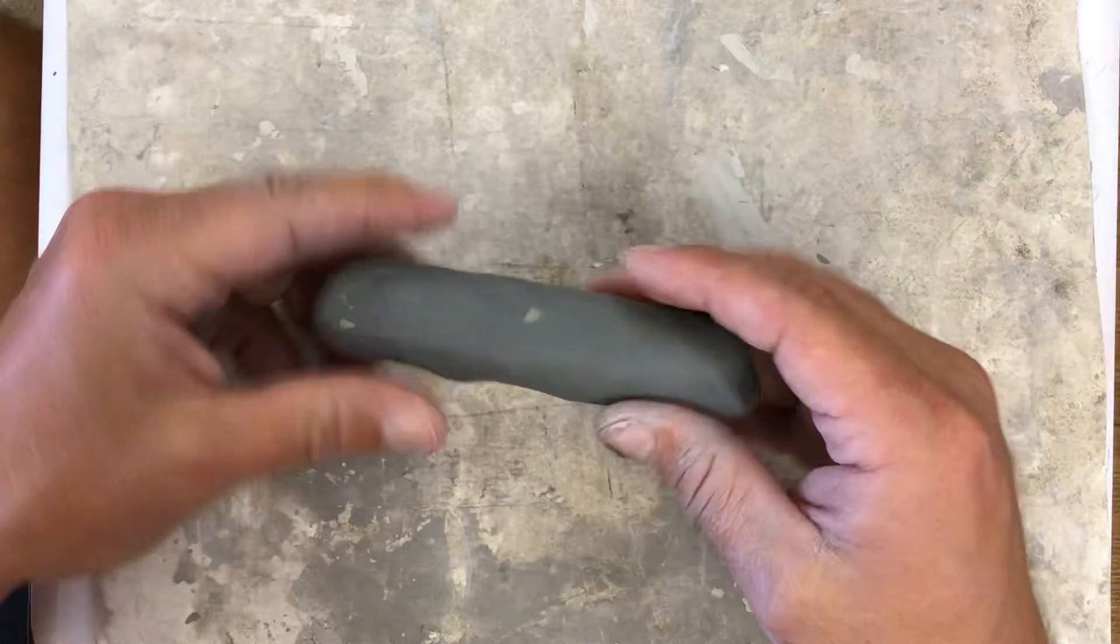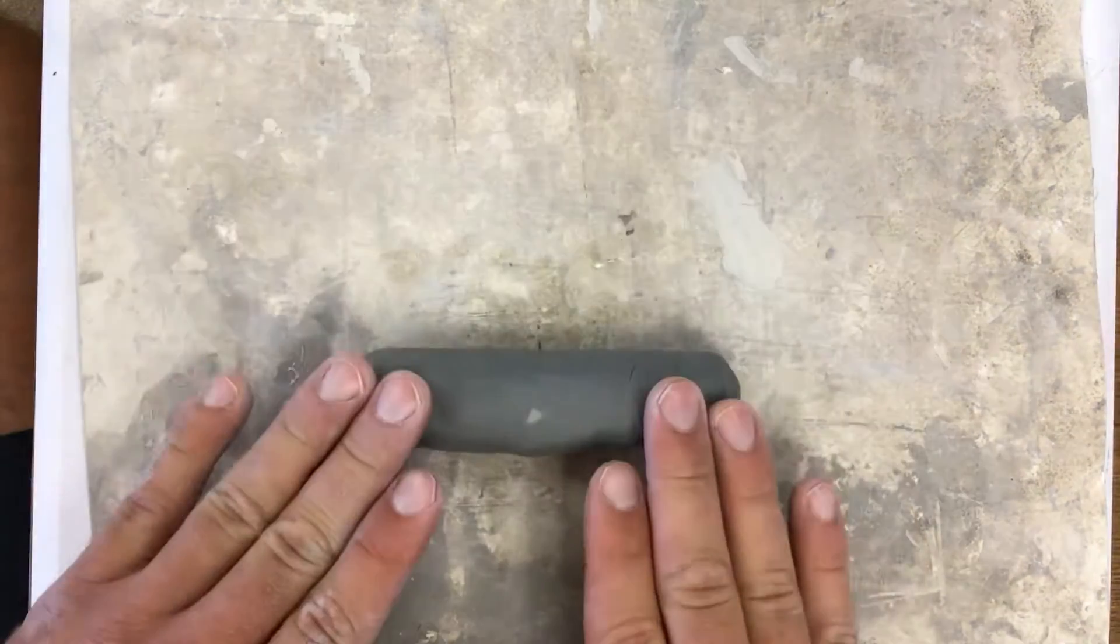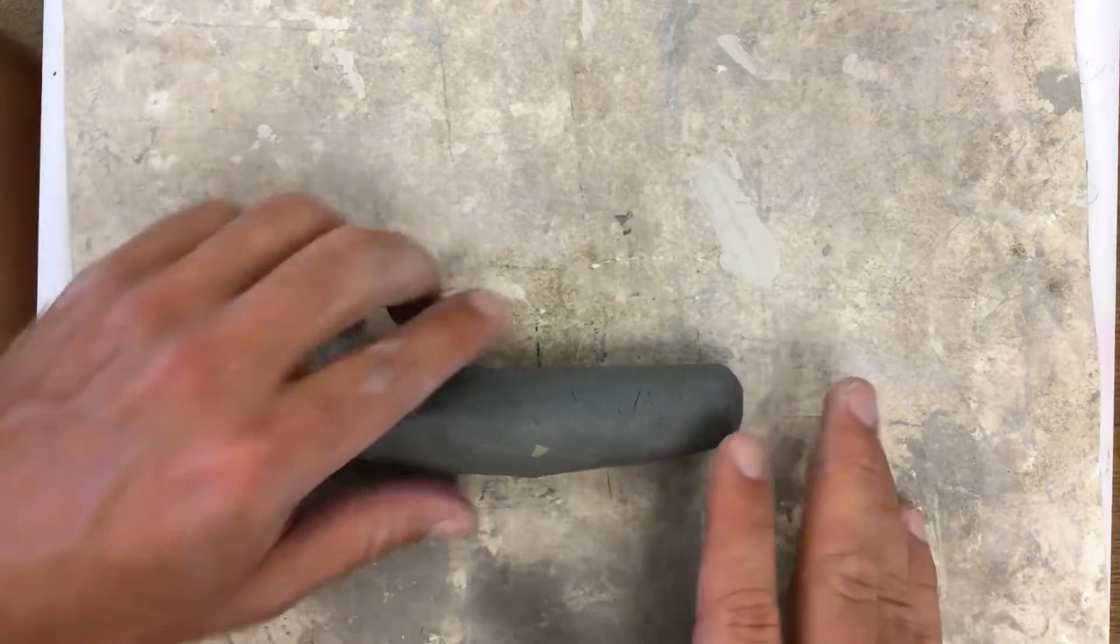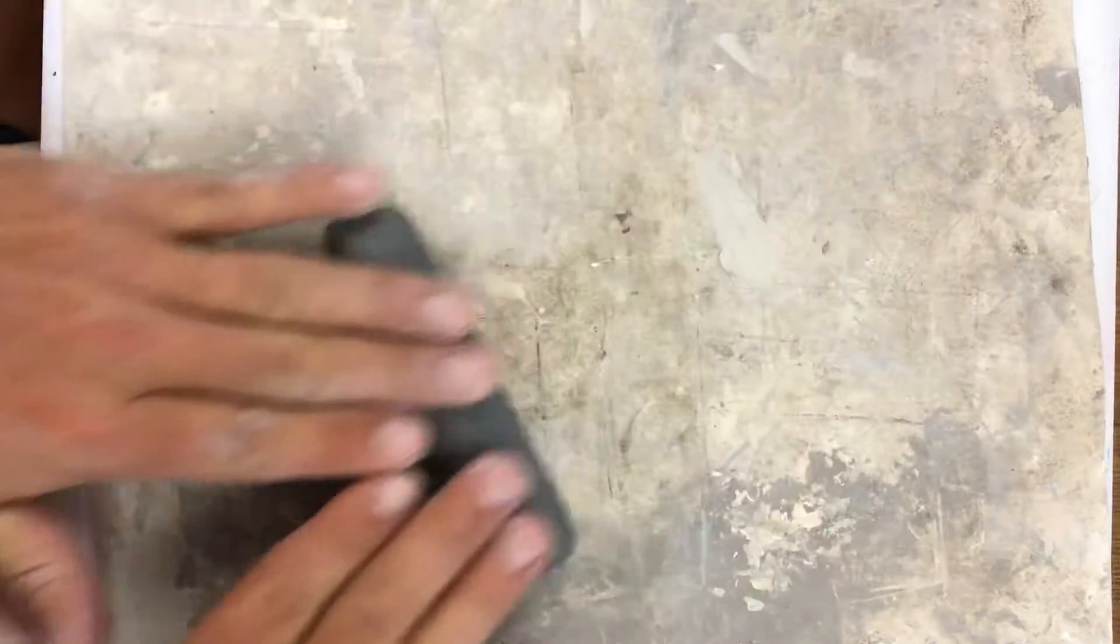All right, I've got this. This is a good starting point. When I roll, I don't want to go back and forth to the same depth. So what I try to do instead is I try to extend a longer roll and then bring it back.